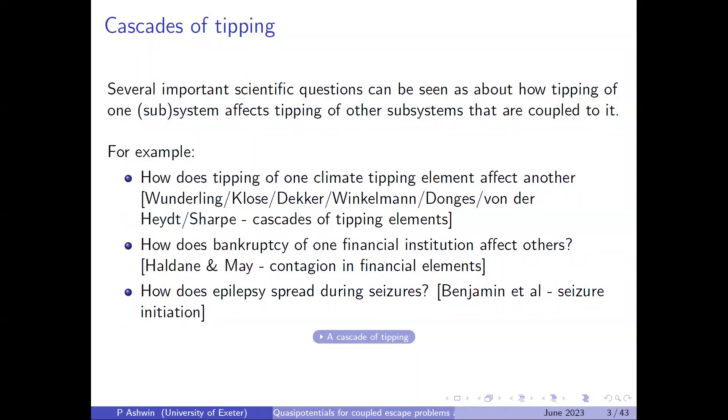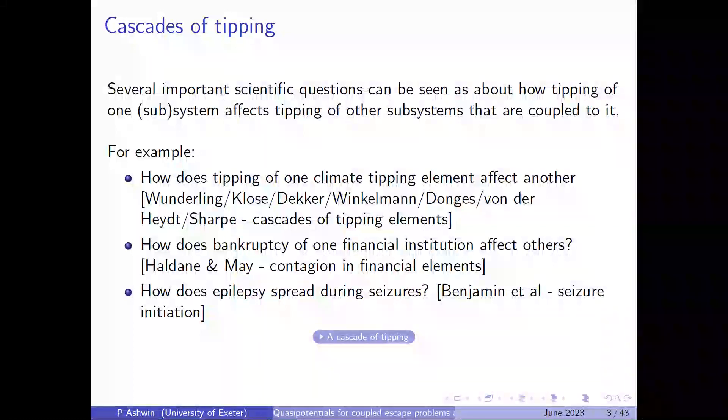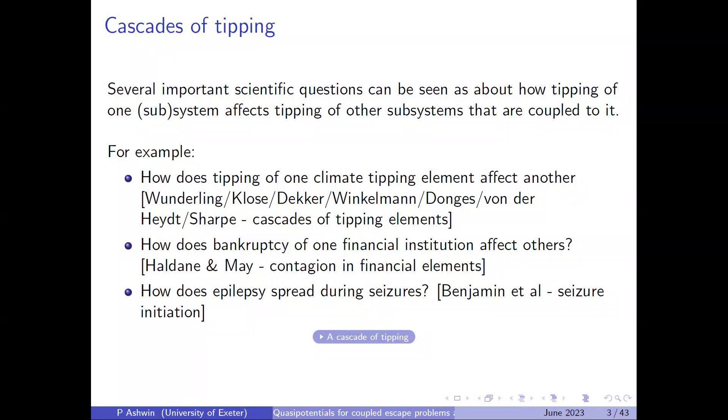Well, probably in this audience, I don't need to say too much about the importance of how one tipping point may affect another, or more specifically, how one subsystem tipping may affect tipping of other subsystems that are coupled to it, and for this community, I guess the coupled climate tipping elements is something that has been increasingly looked at as something of interest. Put a few names down there, but there are many more that I think are starting to look at this. But also in things like coupled financial systems, if you have bankruptcy of one financial institution, how does it affect others? The idea of contagion in financial elements, in financial system, or how does epilepsy spread in the brain during seizures? There's evidence that it will tend to start at one focus and then spread if the conditions are right.